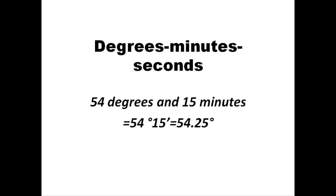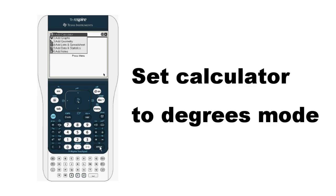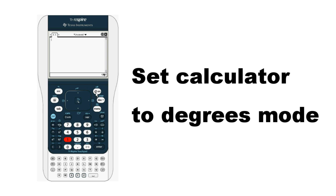Instead, let's take a look at how to do this on the calculator. In order to do calculations involving degrees on your Nspire, you'll first want to make sure the calculator is set to use degrees. Use the Home button, go to Calculator Settings, and change from radians to degrees if necessary.